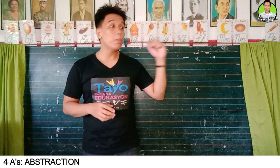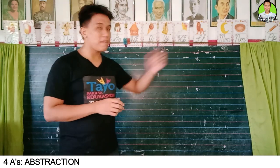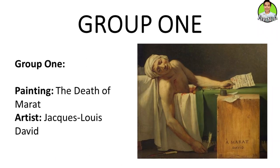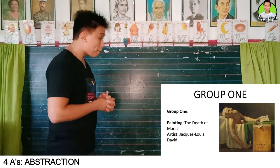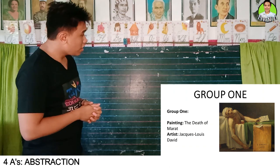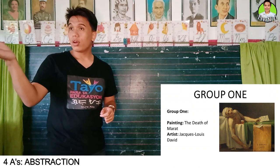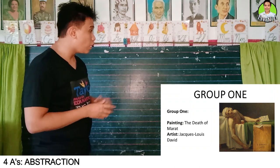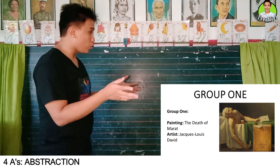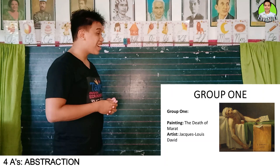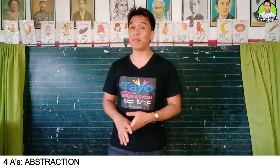Is everybody finished? Okay, if you are done, you can now go back to your seats. Let us begin with group one. Who is your reporter? Rika May. For group one, the painting assigned to them was 'The Death of Marat' by Jacques-Louis David. What did you notice about the line style and texture of the painting? The lines are very visible. The arms are very well defined. What about the texture? It is very smooth. Did you see any visible brush strokes? None. Well done, group one! Three claps — one, two, three.